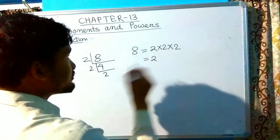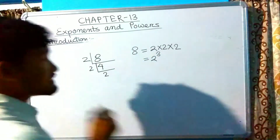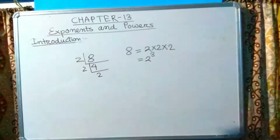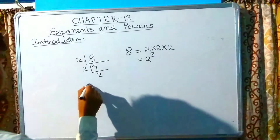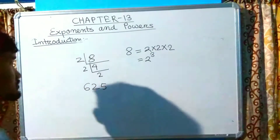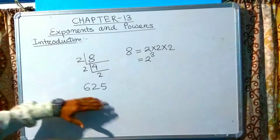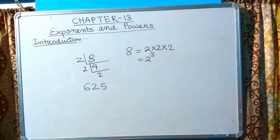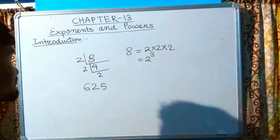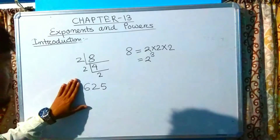So we can write 8 as 2 raised to the power 3. Let's take another example: 625. We have to write 625 in exponent form. To write in exponent form, we have to find out the prime factors of 625.